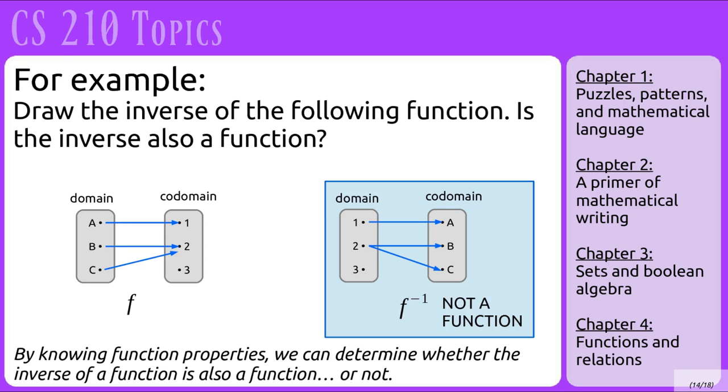For example, we might have a diagram of a function, and we have a discrete amount of elements in the domain and codomain. And then we have to identify whether the inverse is also going to be a function. We can find that by diagramming it or by knowing the function properties.